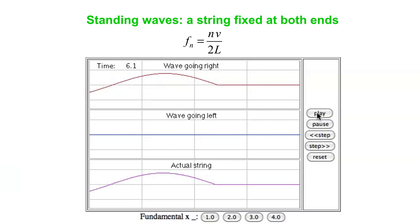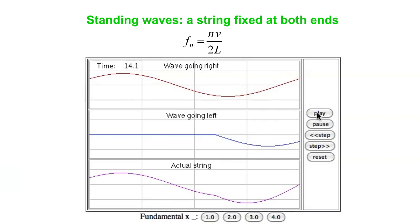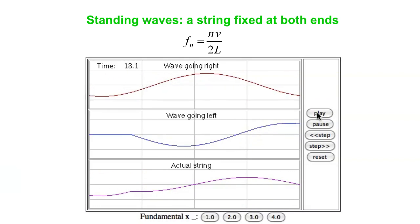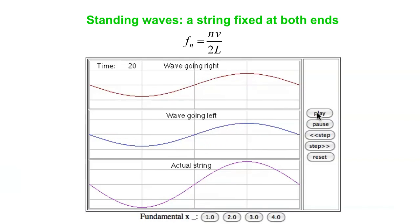Now we'll do the second harmonic. In this case you get a full wavelength fitting in the length of the string, and you again get constructive interference.